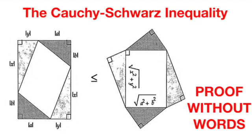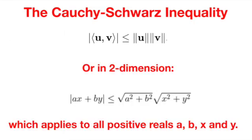In today's Proof Without Words series, let's take a look at the Cauchy-Schwarz inequality. At its very fundamental definition, the Cauchy-Schwarz inequality states that the dot product of two vectors is always less than or equal to the product of the norm of the two vectors.